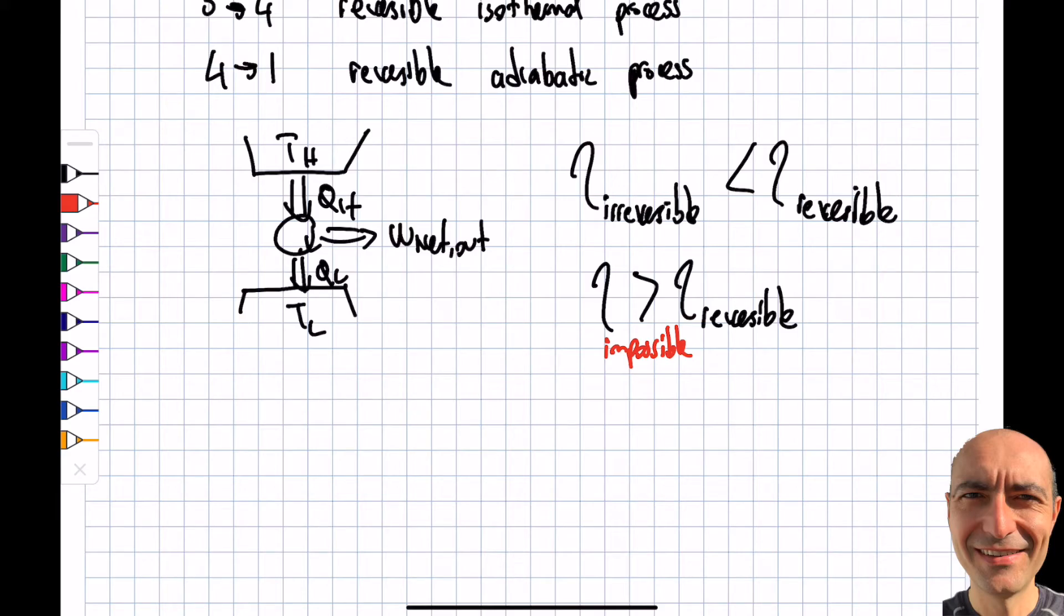Another principle that I'm going to use and show you is the efficiencies of all reversible engines operating between the two reservoirs are the same. So I only have one unique reversible efficiency. I'm not going to go in detail because we do it in thermodynamics 2, but this will be, you remember, this was QL by QH from the previous segments.